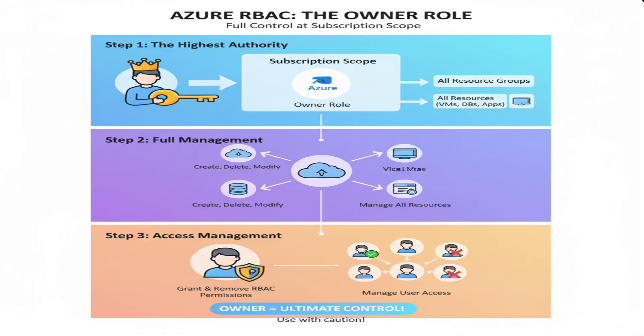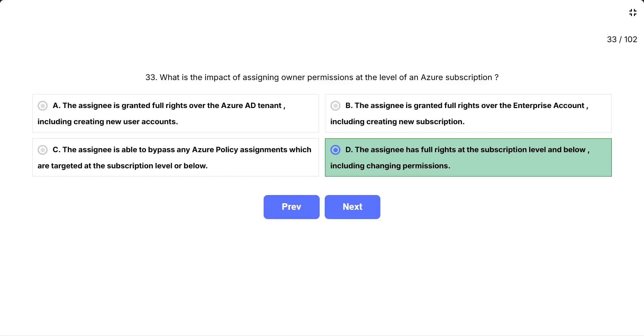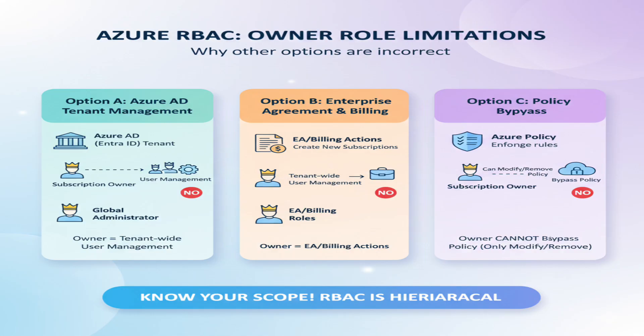Owner is the highest RBAC role at a chosen scope. At the subscription scope, it grants full management of the subscription, all resource groups, and all resources beneath it. It also allows managing access — granting and removing RBAC permissions within that scope. Why the other options are incorrect: Option A, Azure AD tenant management needs tenant-level roles like global administrator; subscription owner does not grant tenant-wide user management. Option B, enterprise agreement and billing actions such as creating new subscriptions require EA billing roles, not subscription owner. Option C, owners do not bypass Azure policy — policies still enforce their effects unless the owner changes or removes policy assignments or exemptions.